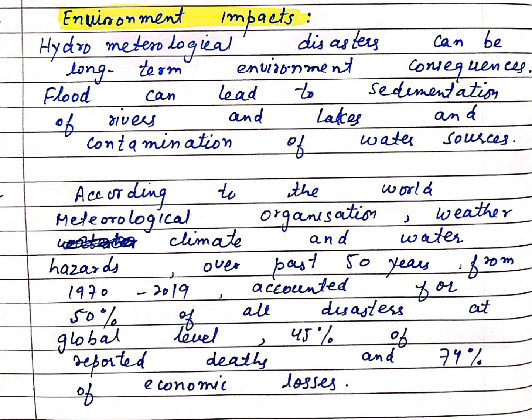According to the World Meteorological Organization, weather, climate, and water hazards over the past fifty years — from approximately 1970 to 2019 — account for 50% of all disasters, 45% of disaster-related deaths, and 74% of all economic losses from disasters.